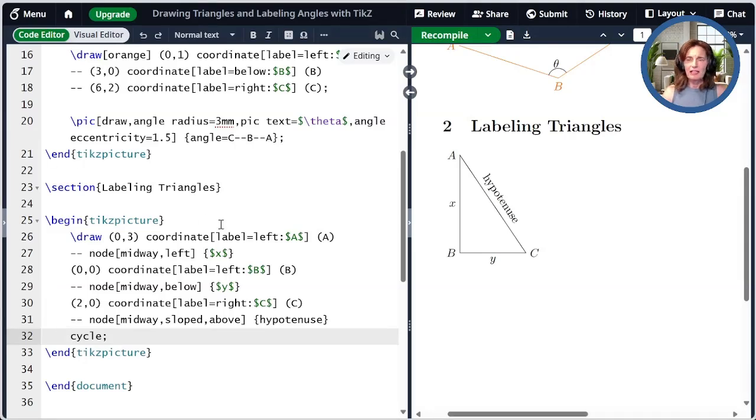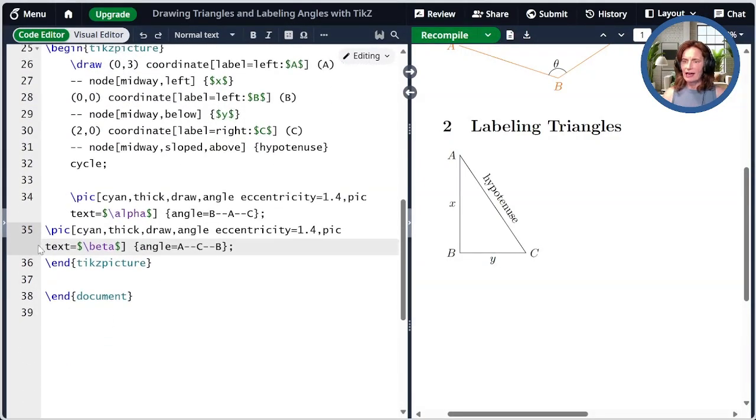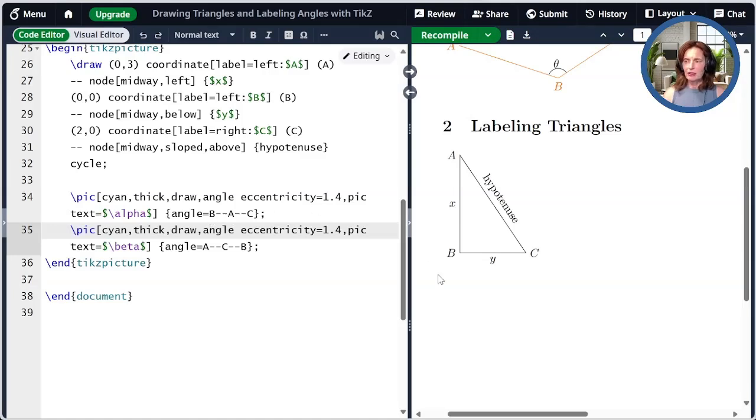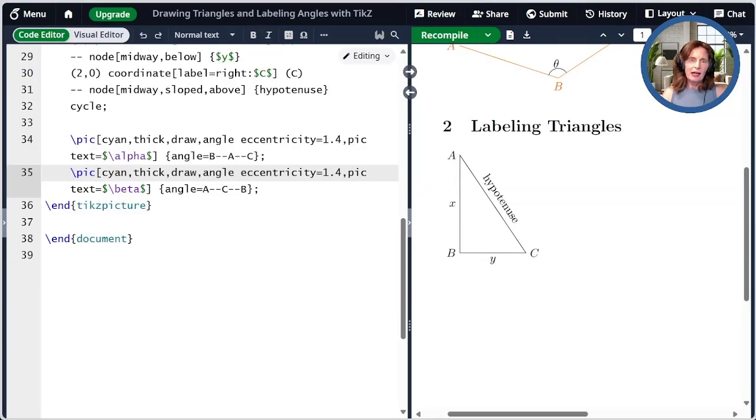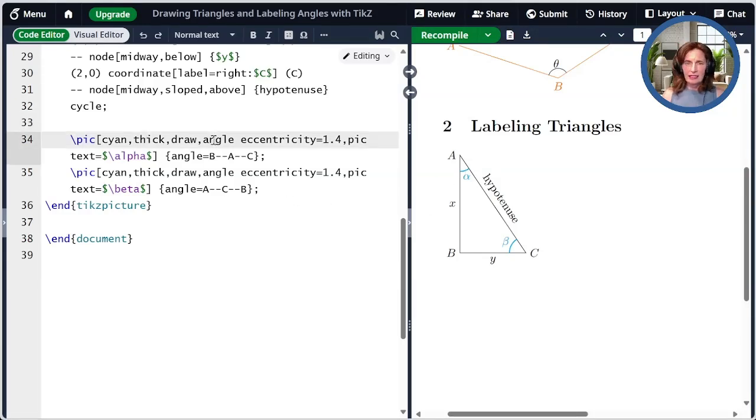Next, let's label the angles at A and at C. For the angle at A, we're going to start at B and then go to A because that will have the angle on the right side. For the angle at C, we start at A and then as we're walking along, this angle will be on our right side as well. Let me compile that and you'll see what happens. We've drawn here the angles in cyan. We've specified to make the lines that we draw thick. And then we are making the angle eccentricity which says how far out the label should go to be 1.4. And then we specify the text of alpha and beta for the two angles respectively. These are using the default angle radius of 5 mm. I haven't made any change to that.